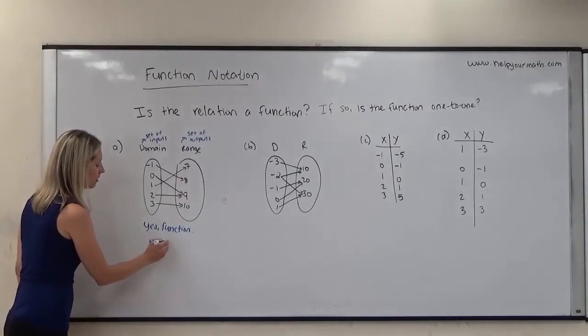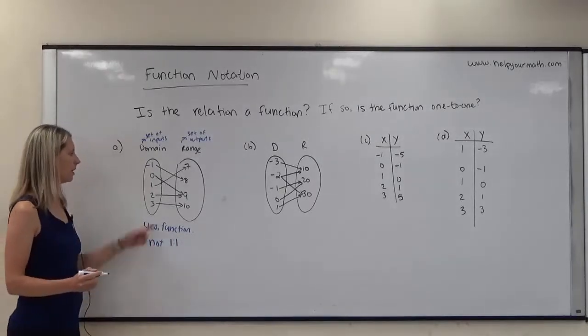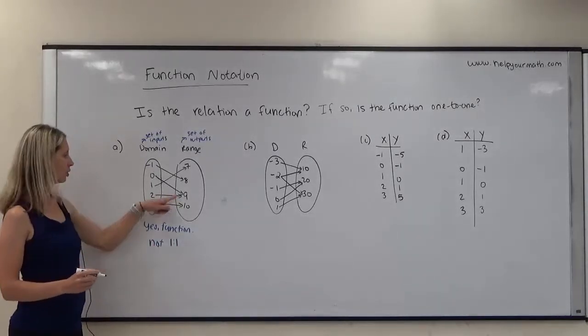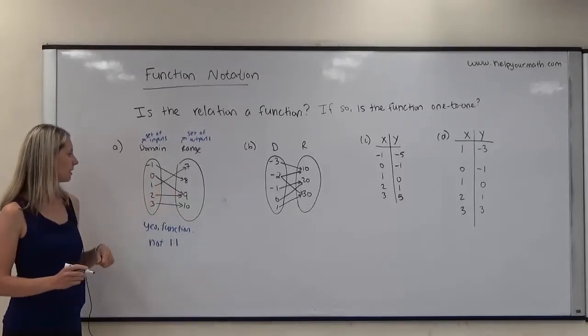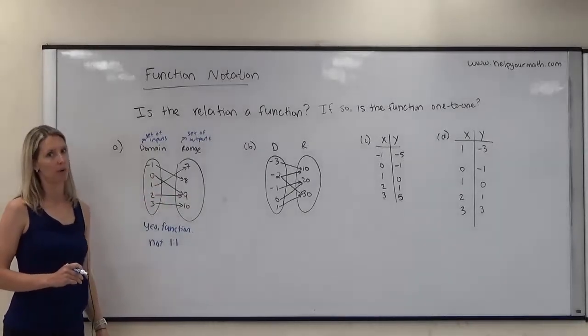In the notation for one-to-one, you can just do one colon one. So because of the nine having two distinct inputs, it is not a one-to-one function.